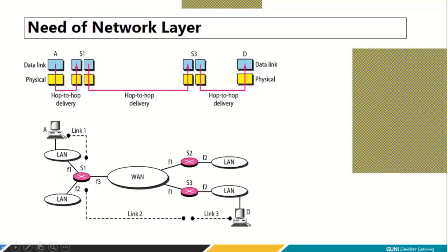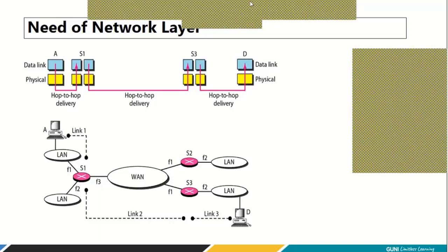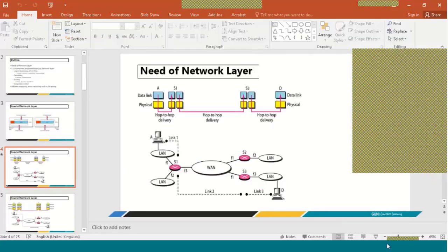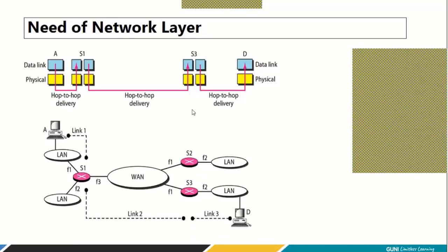The responsibility of the data link layer is limited to hop-to-hop delivery. Intermediate routers have three layers: physical layer, data link layer, and network layer. All intermediate routers have these three layers. Your source and destination machines have all five layers: application layer, transport layer, network layer, data link layer, and physical layer. A switch has only two layers.